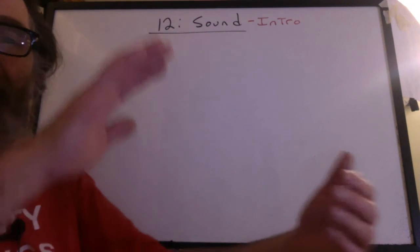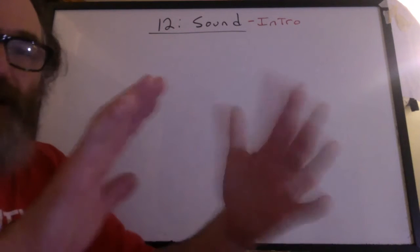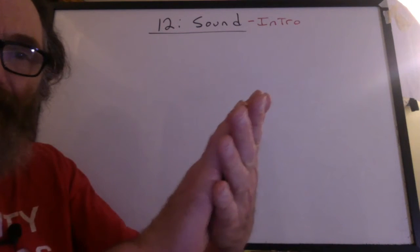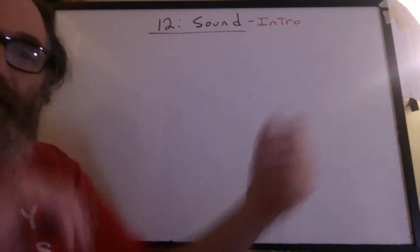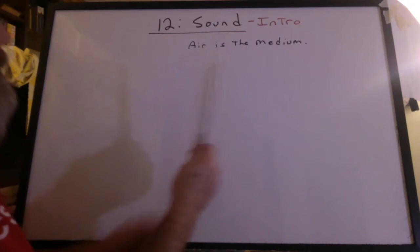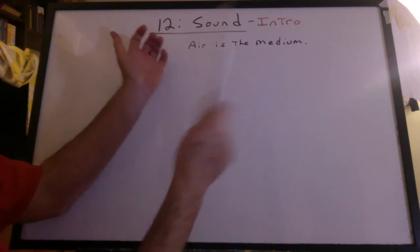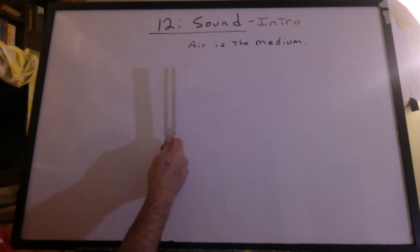When I clap my hands, I make a sound. What did I just do to the air? I compressed it, and it sends the energy out in the form of a compressional wave. Well, air is the medium, and if I strike the tuning fork, I can make a continuous sound. What's happening to the air?